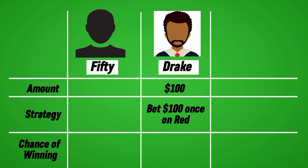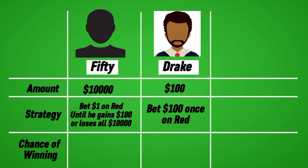50, conversely, enters the casino with $10,000 but chooses a different tactic. He repeatedly wagers $1 on red until he either reaches $100 in winnings or exhausts his funds. He persists until one of these outcomes materializes. Remember, red bet pays out only what is staked, so he must accumulate 100 more wins than losses before depleting his entire balance. There are 18 out of 38 spots that are red, which roughly equals a 47.4% chance any individual spin lands red.